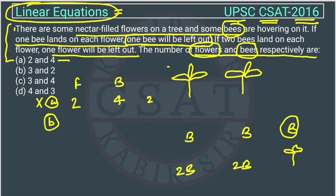Option B: flowers are 3 and bees are 2. If we allot one bee to each flower, there are three flowers but only two bees, so one flower is remaining. The first condition is not getting satisfied here either, so option B cannot be the answer.